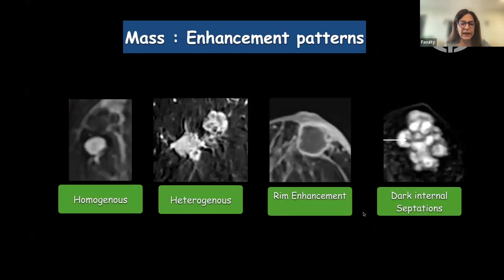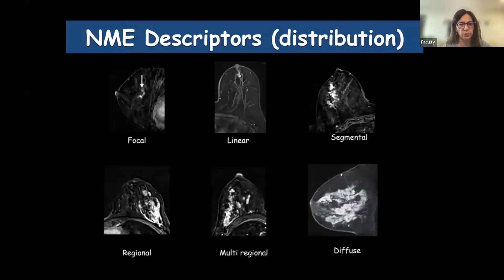The enhancement of masses can be homogeneous, heterogeneous, rim enhancement, or dark internal septations. Homogeneous enhancement suggests a benign lesion; heterogeneous suggests malignancy. Rim enhancement can be seen in both benign and malignant lesions. Dark internal septations are most commonly seen in fibroadenomas. Always look at the enhancement patterns.